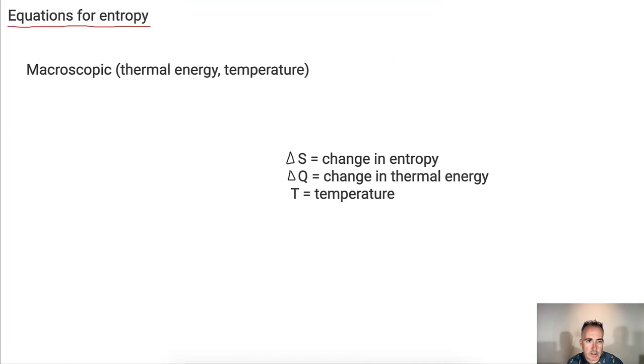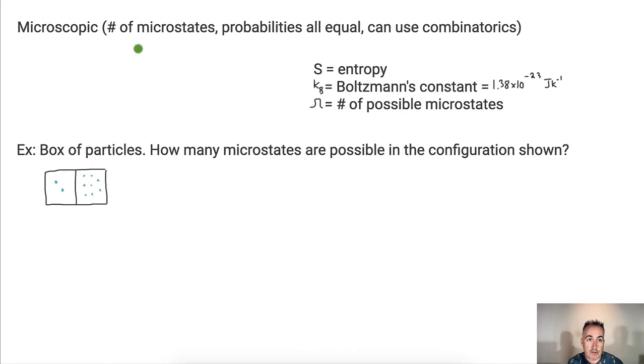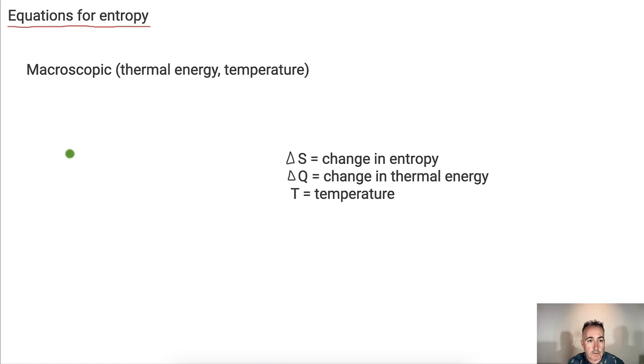So, let's look at this equation. We have these equations for entropy themselves. We have macroscopic, which means for larger objects, things like thermal energy and temperature. We'll be comparing that to microscopic in a second here. So, first of all, we have this equation right here. The delta S, so the change in entropy in a system, is equal to the change in thermal energy divided by the temperature. So, this is in your data booklet.